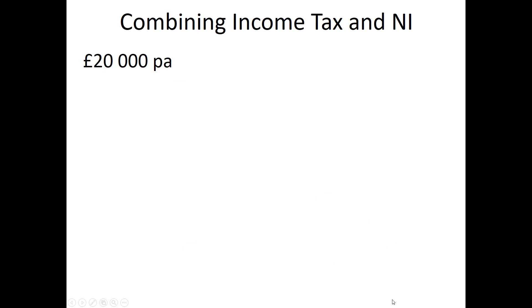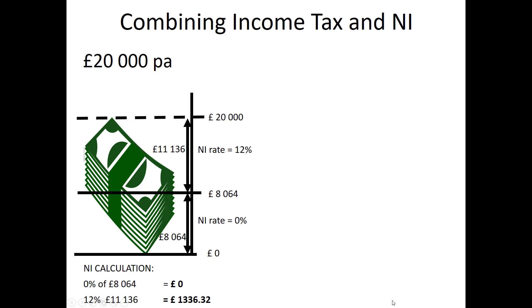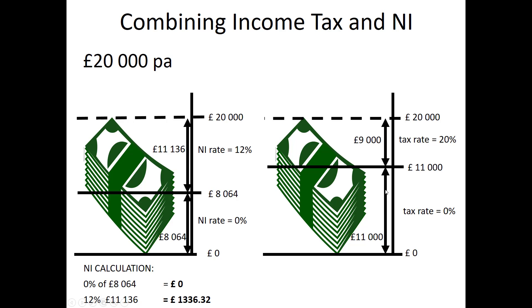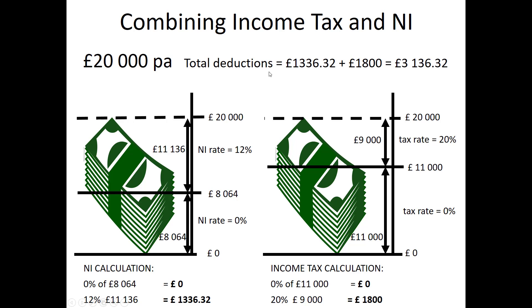For somebody on a slightly higher wage — like £20,000 a year — their National Insurance bill is £1,336.32. To work out their income tax bill: there's their £20,000, there's the £11,000 tax threshold at which they start paying the basic rate. So £9,000 above the threshold is taxed at 20%, and £11,000 at the bottom is taxed at 0%, giving a total tax bill of £1,800. Total deductions are those two figures added together. Notice that for this person the National Insurance charge is quite significant, but it's been overtaken by the tax bill.